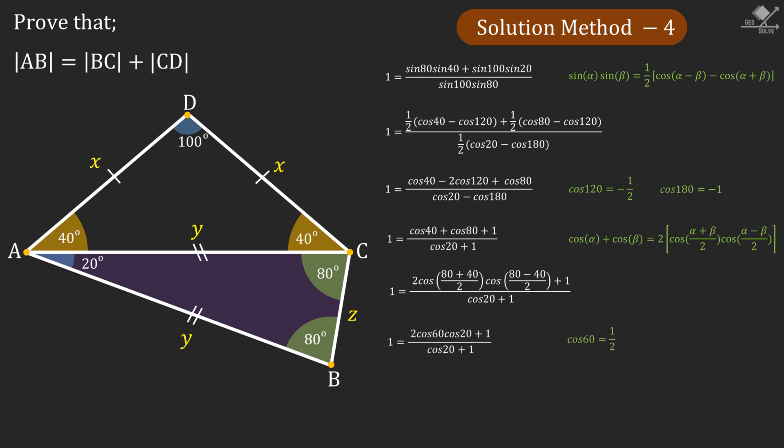When we put the value of cosine 60, our equation will become like this. So the right side of the equation will also become 1, and that will prove that our starting equation is true. This will conclude our solution for this problem.